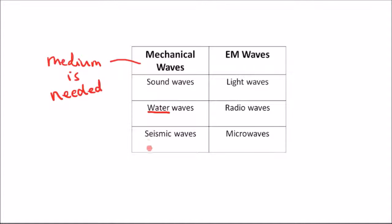Seismic waves, which are created during earthquakes, travel through the earth, so their medium is the earth. Before a sound wave reaches your ear, normally it will travel through the air. So the air is the medium in this case for sound waves.